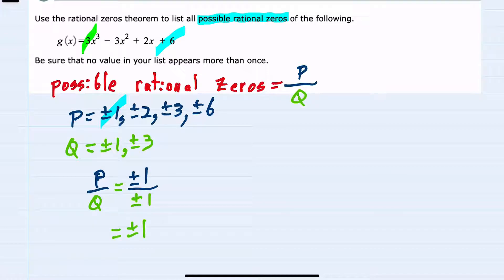Sticking with that first p, there is the second combination where q could be plus or minus three. So listing that one would have plus or minus one in the numerator, plus or minus three in the denominator, which simplifies to plus or minus one third.